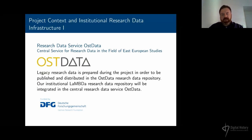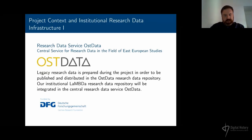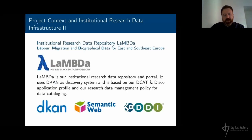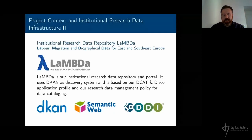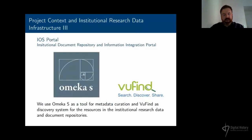Our project context is our joint project called OST Data, which is about the establishment of a central service for research data in the field of East European studies. Until now we focused more on the infrastructure part of the project. A second project context is our institutional research data repository called Lambda. In the OST Data project we will integrate our own research data, published in Lambda and also integrated in OST Data, and then we have an information integration portal providing an institutional knowledge graph in the future.